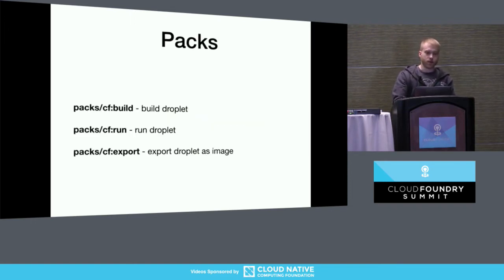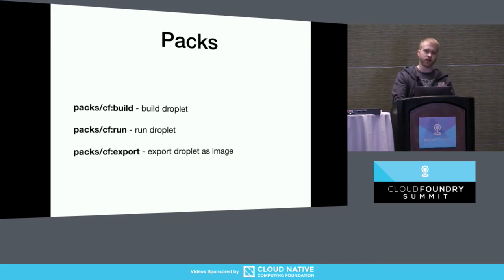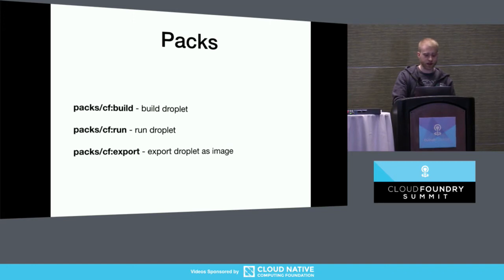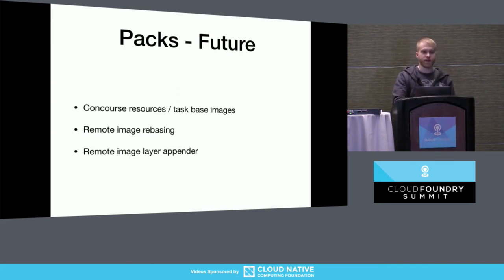The backend for CF Local has just been extracted into images that are independently usable. There's an image published to Docker Hub called pack/CF that lets you, without CF Local and without any other tools besides Docker, use Docker images as processing tools to build droplets, run them, and export them as images — using an interface similar to Google's Cloud Builders. You can use these Docker images as base images in platforms like Concourse or anything that runs Docker images. I'm currently working on a Concourse resource that will use these base images and output new versions of applications using strategies like remote imagery rebasing and remote layer appending.